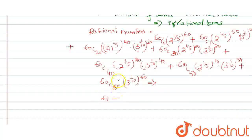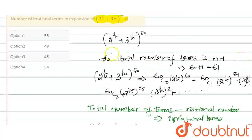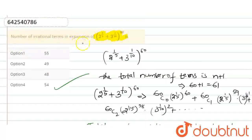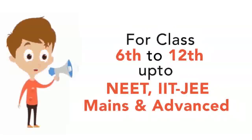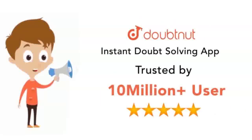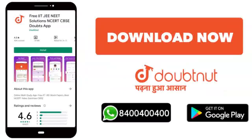So the number of irrational terms is 61 minus 7, which equals 54. Option 4 is the correct answer. The number of irrational terms is 54. Thank you — this channel covers Class 10 to 12 through IIT JEE Mains and Advanced level content, with over 10 million students.